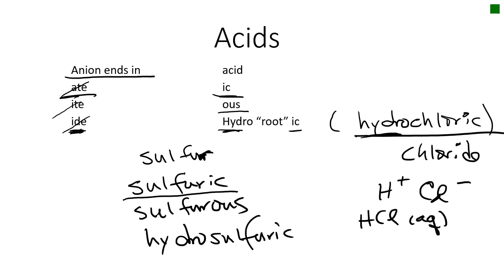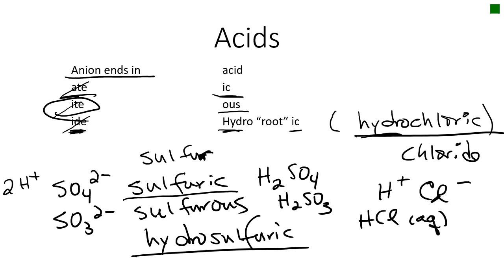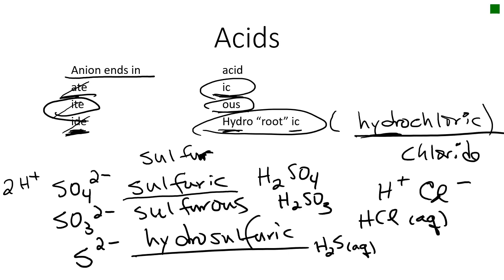Let's look at the three sulfur acids: sulfuric, sulfurous, and hydrosulfuric. Sulfuric comes from the anion ending in -ate, which is SO4 2-minus; adding two H-pluses gives H2SO4. Sulfurous comes from the -ite anion, SO3 2-minus, giving H2SO3. Hydrosulfuric comes from the -ide anion, S 2-minus, giving H2S aqueous. The pattern is: -ate gives -ic, -ite gives -ous, and -ide gives hydro-[root]-ic.